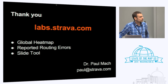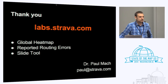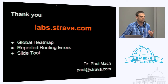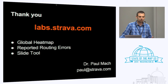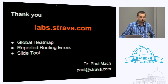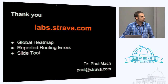That's pretty much a quick run-through of what I have. I want to reiterate that this isn't vaporware — you can use it today at labs.strava. We have a few other things there, like the global heatmap which is 100 million rides and runs and about 220 billion GPS points aggregated down to zoom level 17. We also have that routing tool, and this Slide tool too.